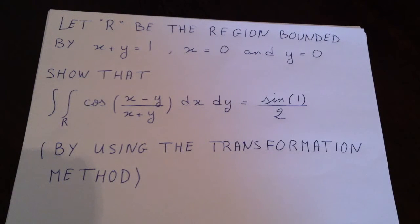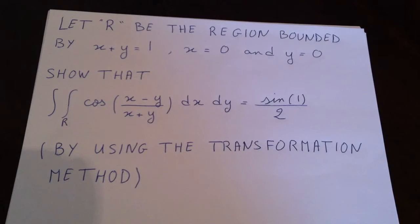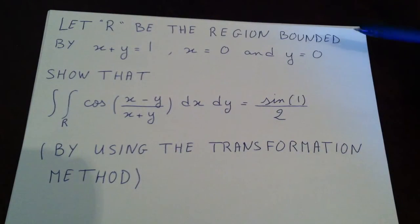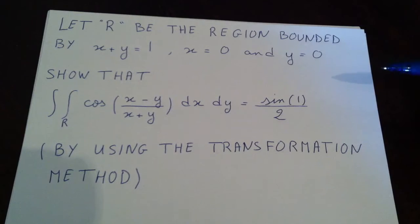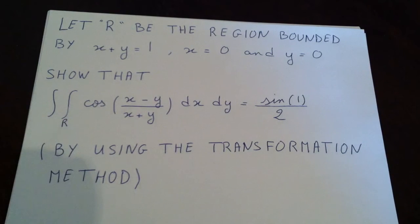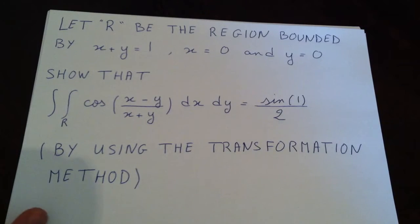Today I'm going to go through an example to solve an integration problem using the transformation method. First, we are going to sketch the region of integration, then sketch the transformed region, then calculate the Jacobian, and finally do the double integration. The example is: let R be the region bounded by x plus y equals 1, x equals 0, and y equals 0. Show that the double integral of cos((x minus y) divided by (x plus y)) dx dy equals sin(1) over 2, using the transformation method.